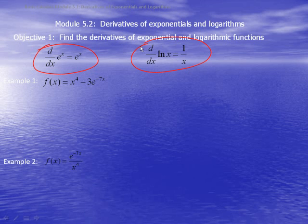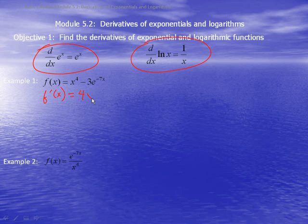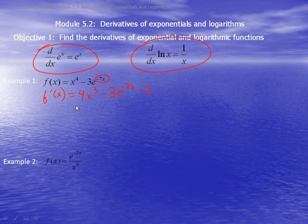Example 1: Given f of x is equal to x to the 4th minus 3e to the negative 7x, let's find the derivative. That would be equal to 4x to the 3rd using the power rule, minus 3e to the negative 7x. We have to watch it because this is a composition of functions, so we multiply by the derivative of the inside, which is negative 7. That gives us 4x to the 3rd plus 21e to the negative 7x.